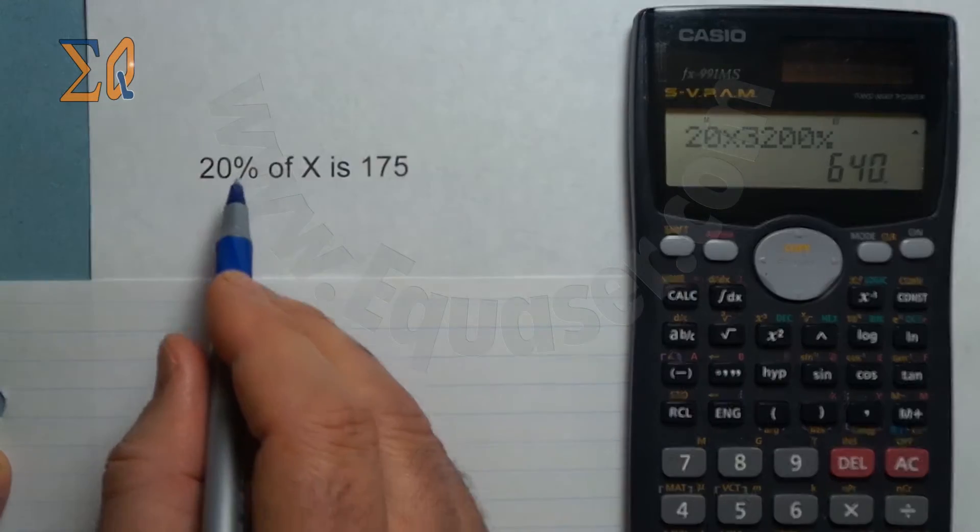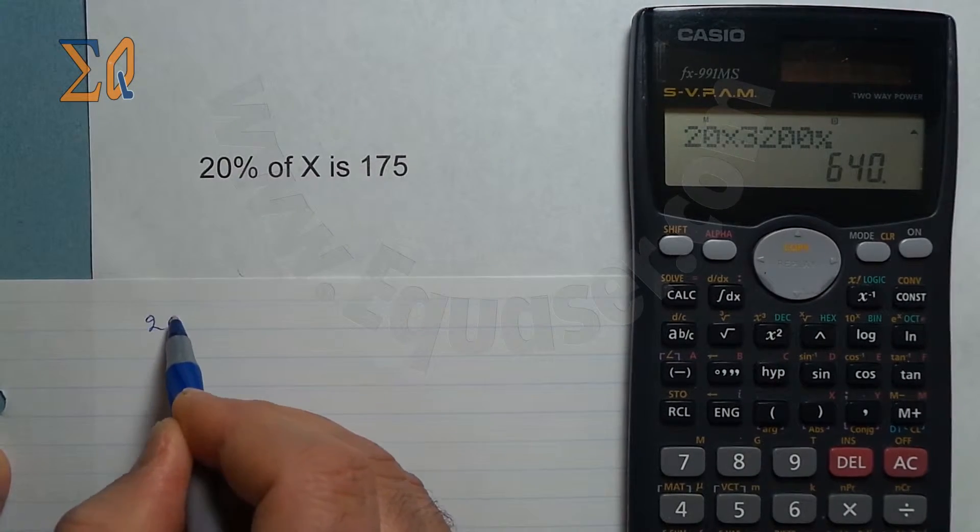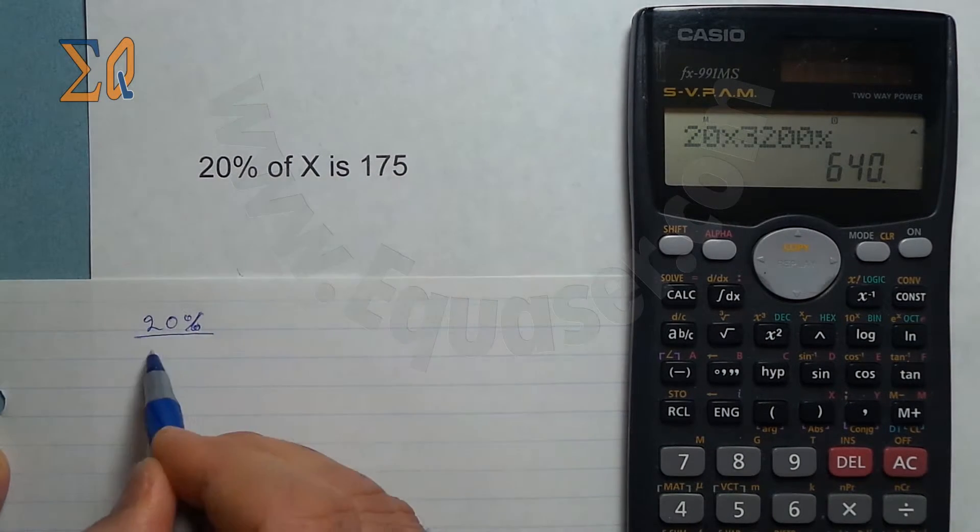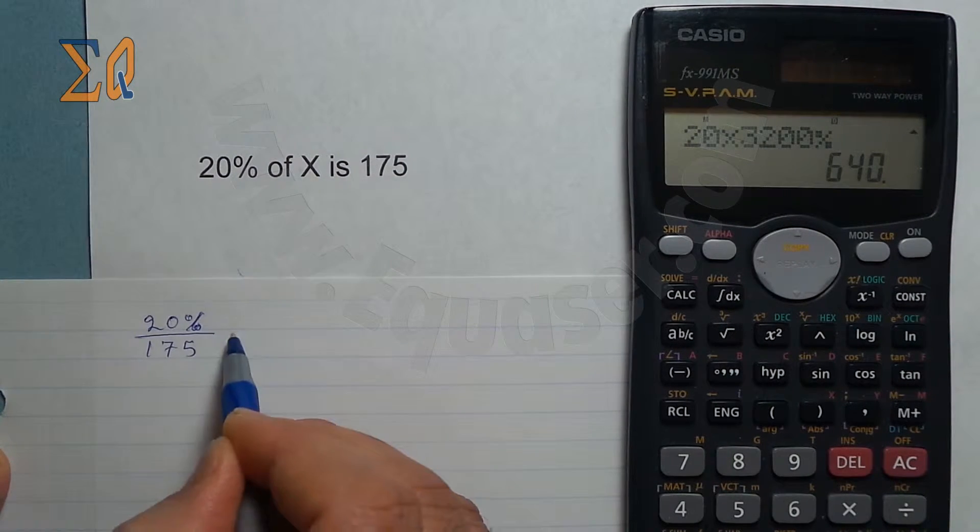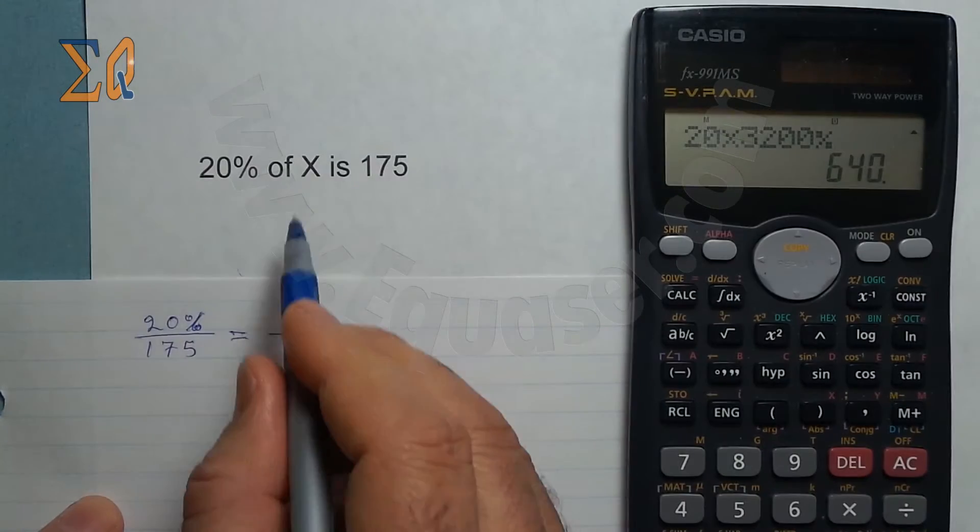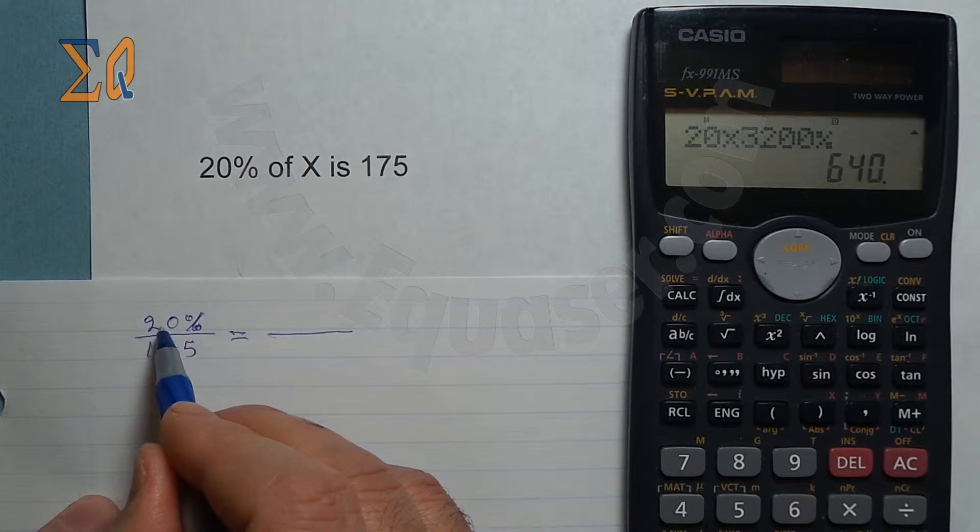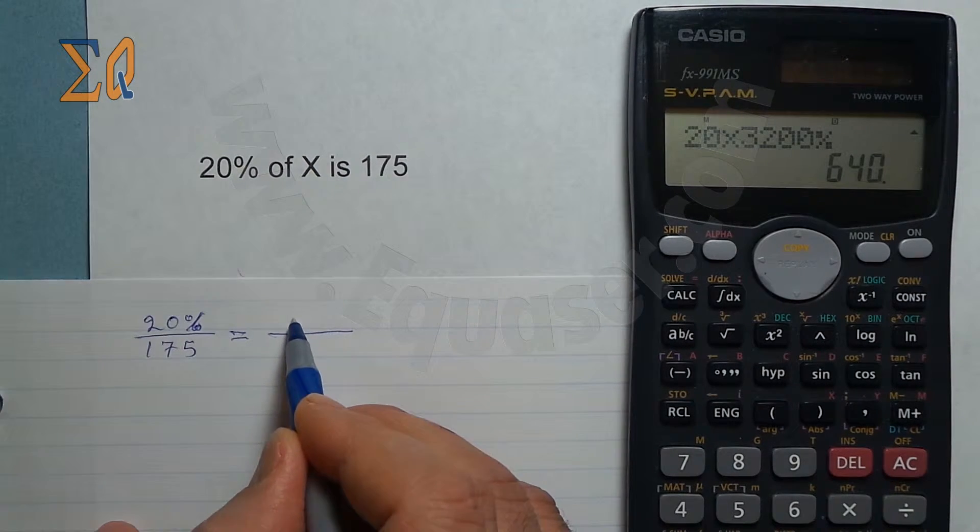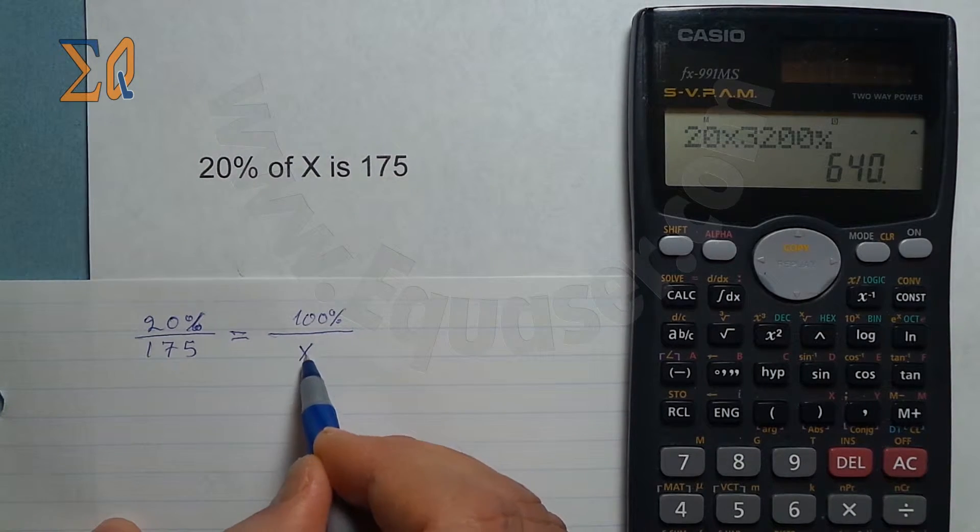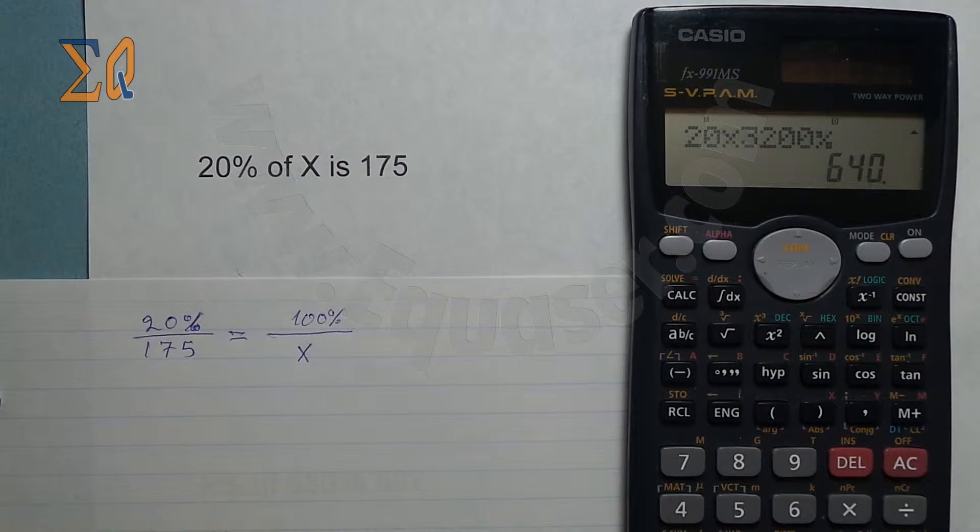20% is 175, so we write 20% over 175 equals, now X percent, this is the whole amount. Because this is 20%, the same way at the numerator write 100%, and in the denominator write X. As soon as you write it this way, then you can solve it.